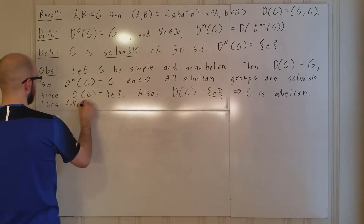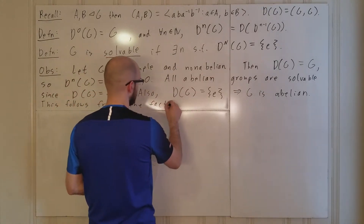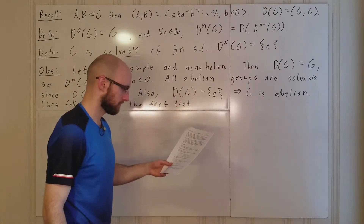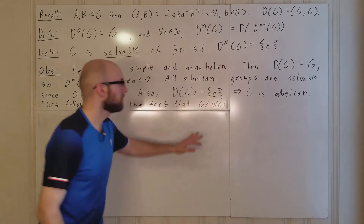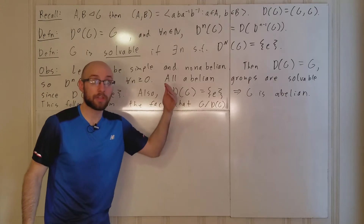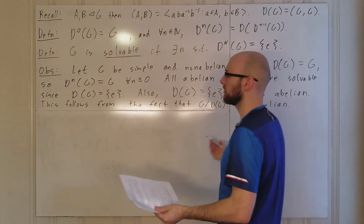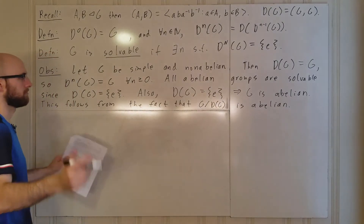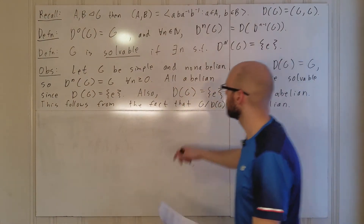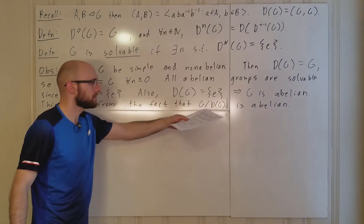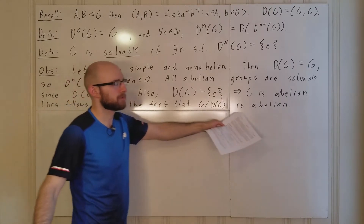This follows from the fact that G mod DG is always abelian. Since DG is normal in G, we can quotient by it. For any group G, quotienting out by its commutator subgroup yields an abelian group. In particular, if DG is trivial, then G mod DG is just G mod {e}, which is G itself — so G is abelian.